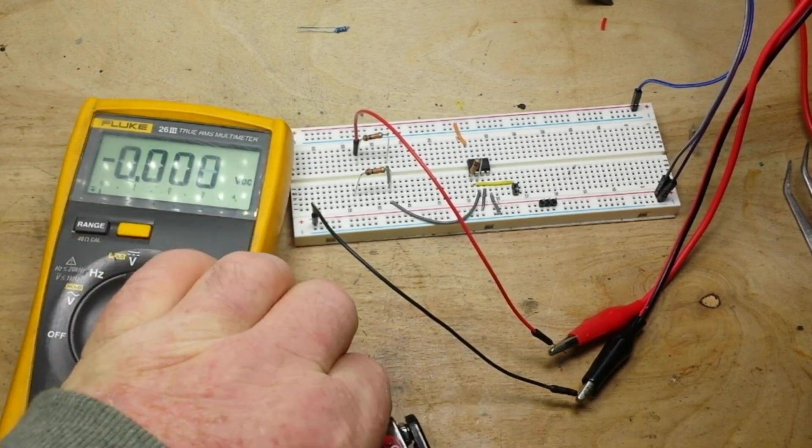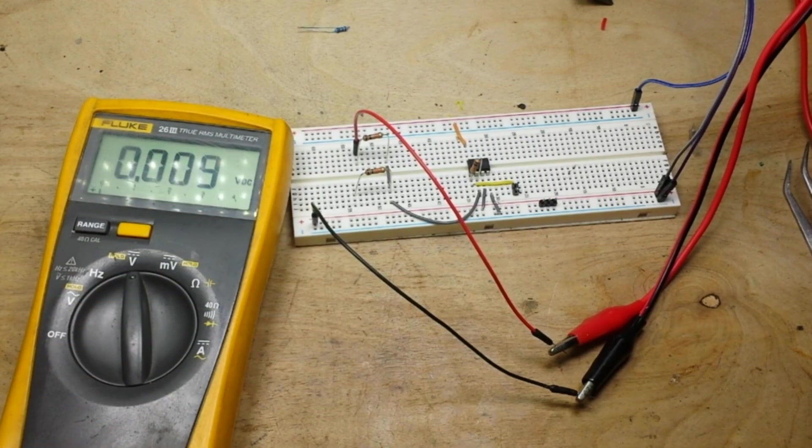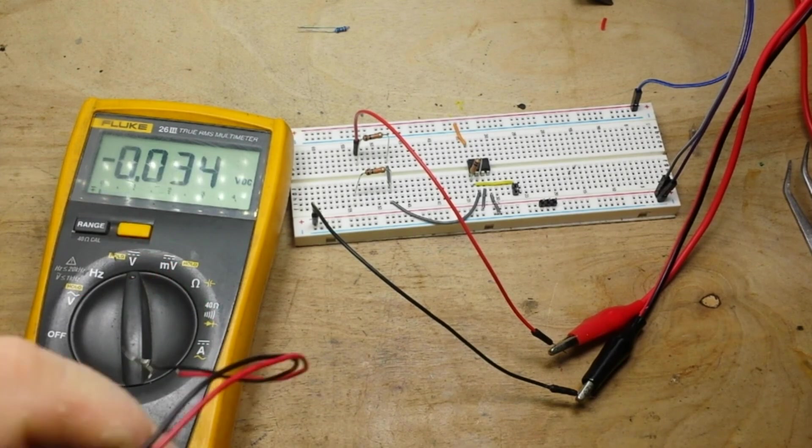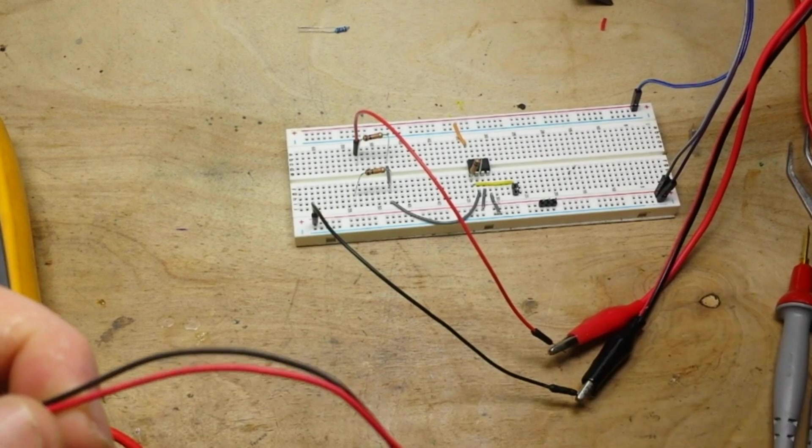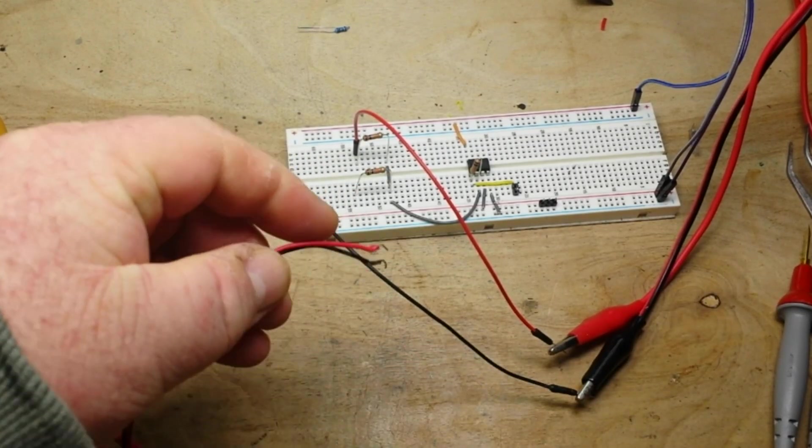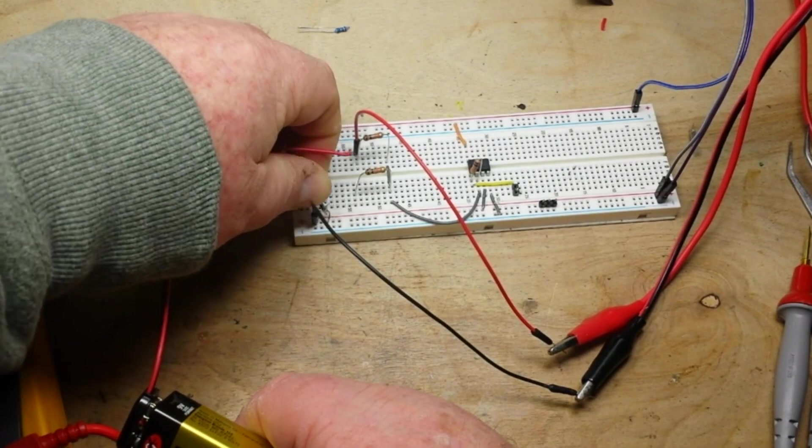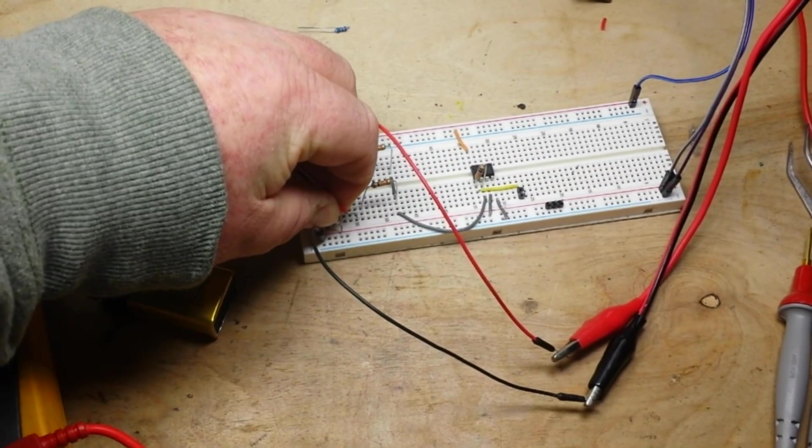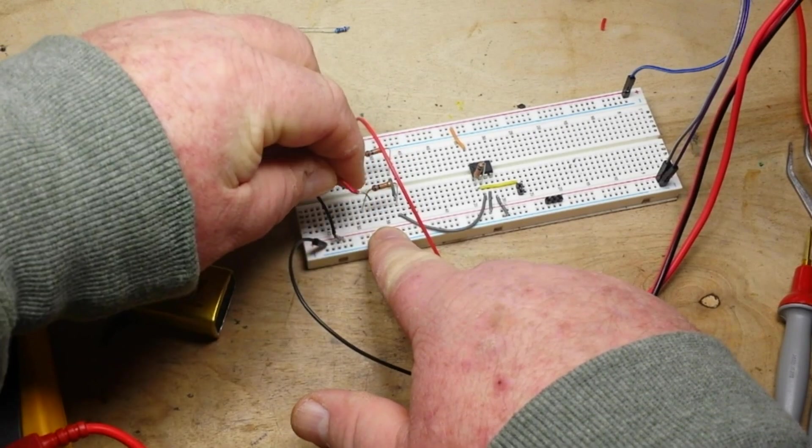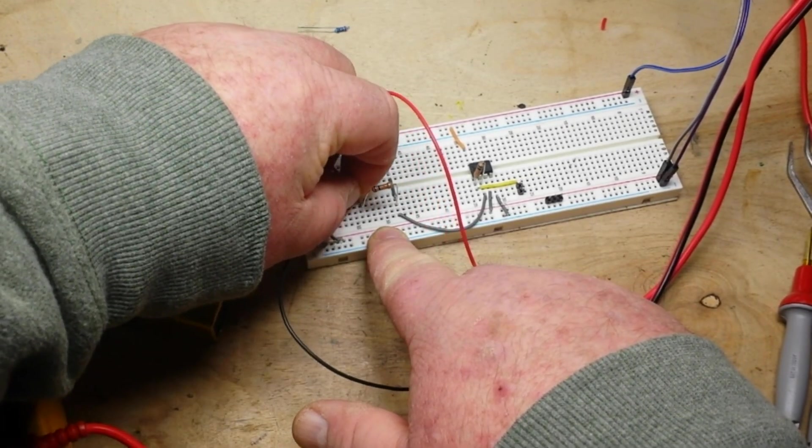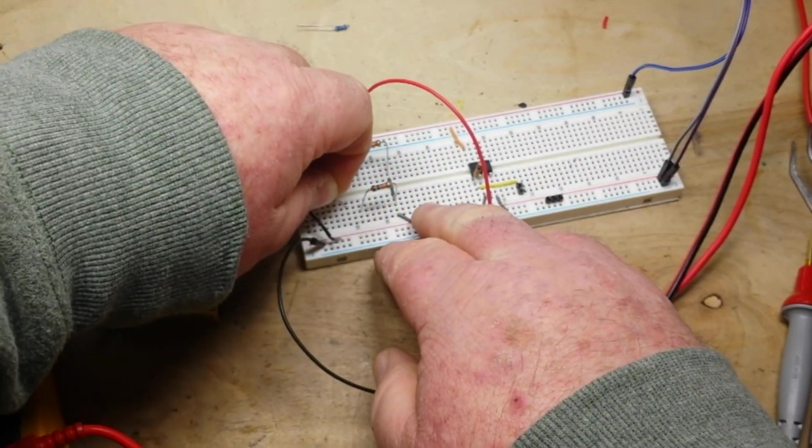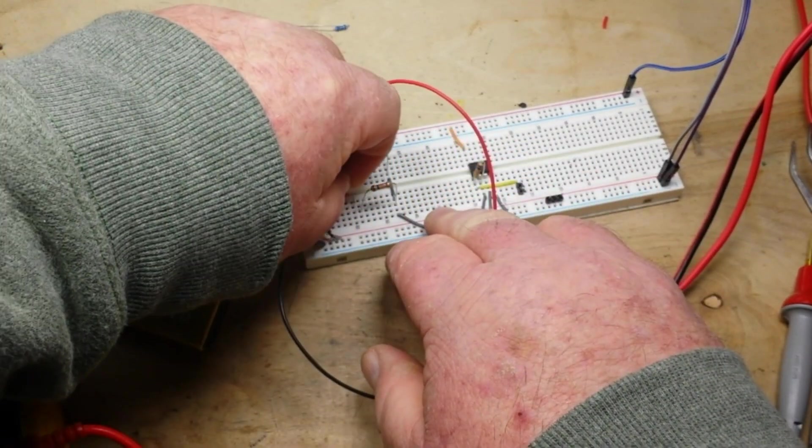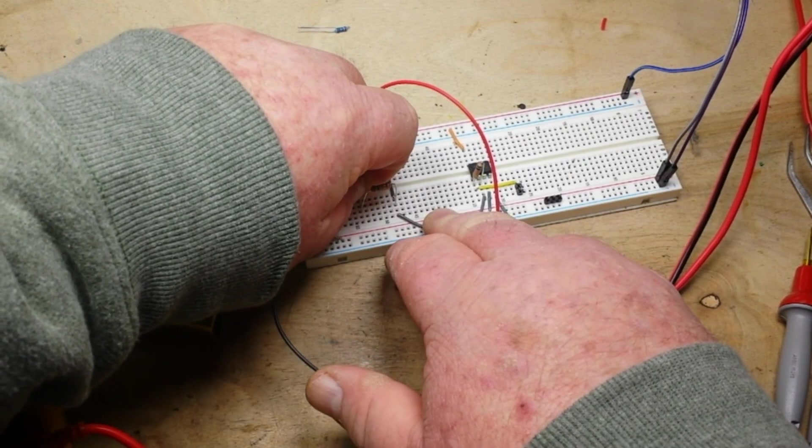Alright, so next we have a slightly dead 9 volt battery that is putting out 8.9 volts, so that will be our second input. And again we put our ground into the ground rail, and then we plug this very flimsy wire into there.